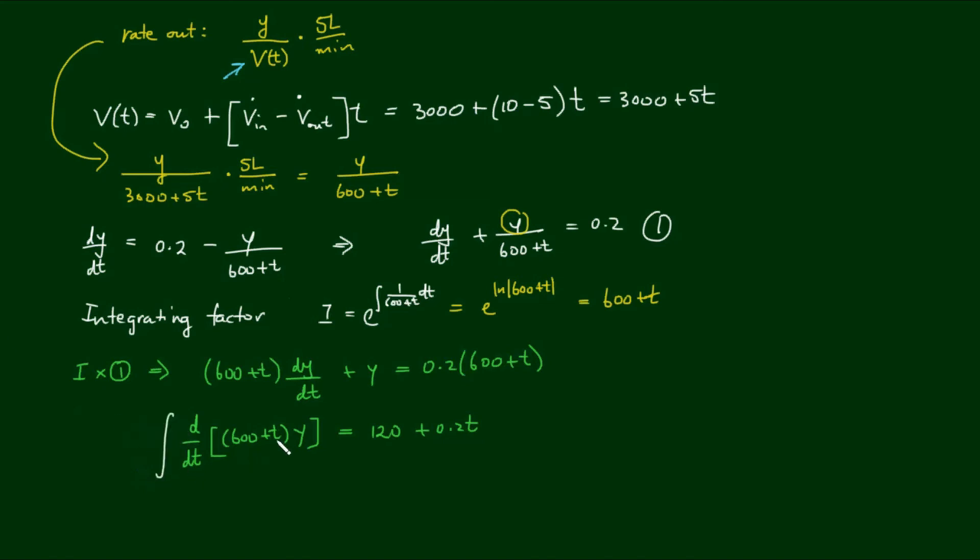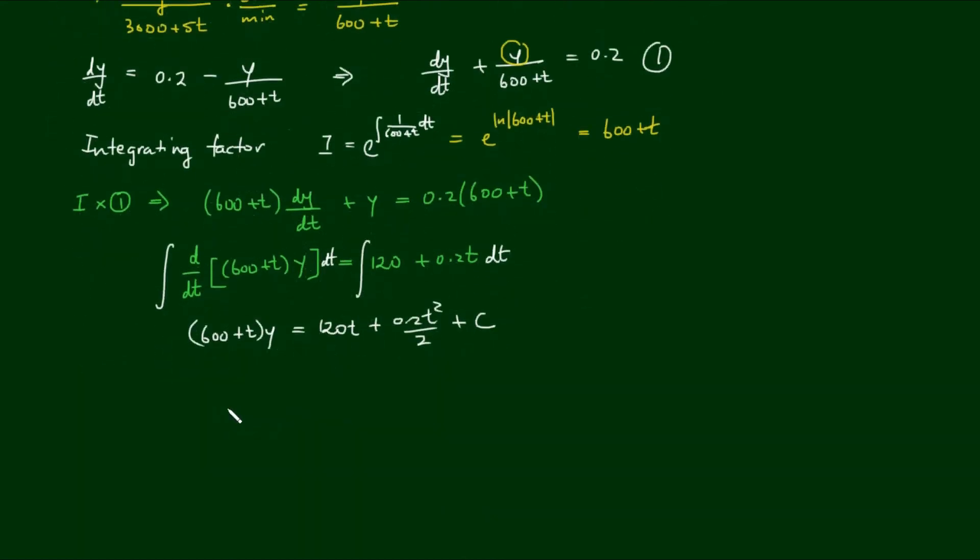Now we simply apply the integral to both sides with respect to time. So the left hand side simply evaluates to 600 plus t by y. The right hand side evaluates to 120t plus 0.2t squared on 2. And because we're integrating as indefinite integrals, we always include the integration constant c plus c. And to isolate y on its own, we simply divide both sides by 600 plus t. So we have 120t plus 0.1t squared plus c all over 600 plus t.